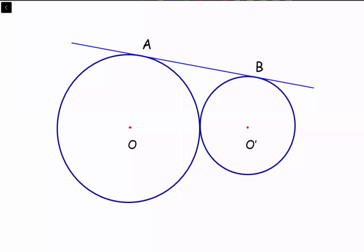Two circles are given with radius r1 and r2 touching each other. We have to find the length of common tangent AB. First, let's start by joining the centers of the circles, O and O'. Joining OA — which is the radius of the first circle — to the tangent. We know that the radius is perpendicular to the tangent. So OA length is r1 and O'B length is r2.